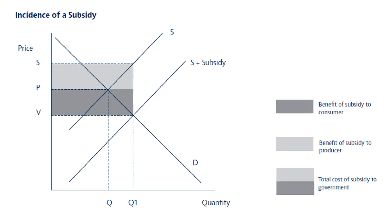So this diagram nicely summarizes that the introduction of a subsidy, the total cost is represented by the light and dark grey areas. That's the total cost of the subsidy to the government. The benefit that goes to the consumer is represented by the dark grey area and the benefit of the subsidy that goes to the producer by the grey area.